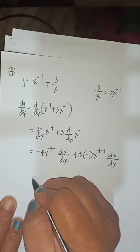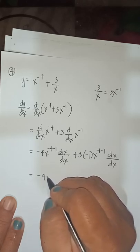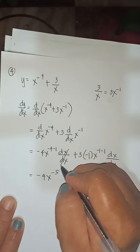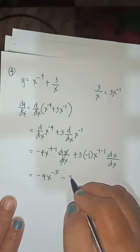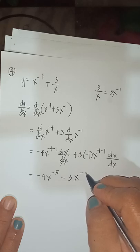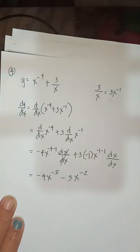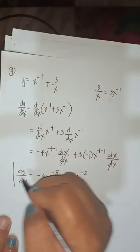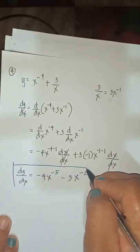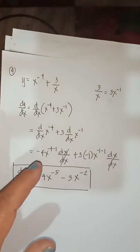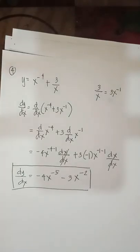Therefore, you will have negative 4x to the negative 5 minus 3x to the negative 2. That is your dy/dx — that is the answer. We will have another example.